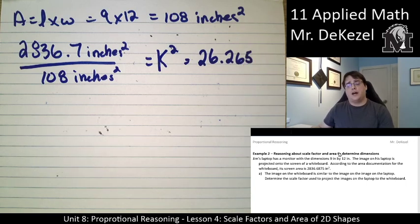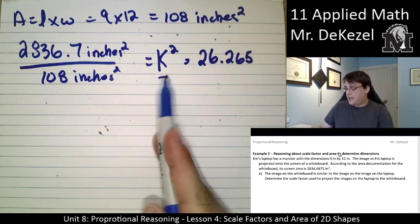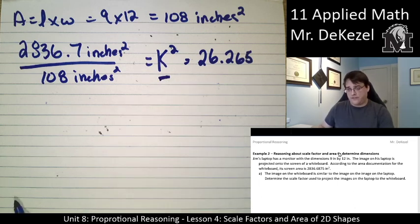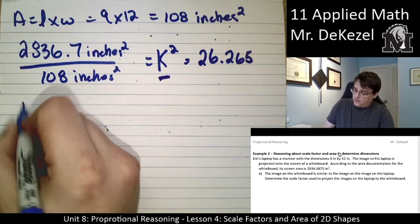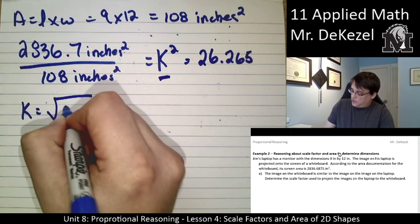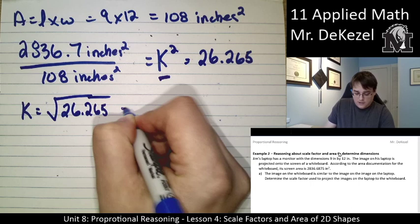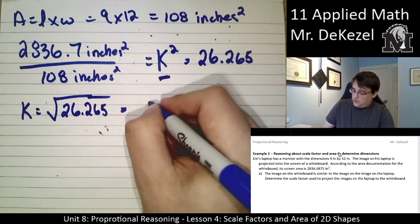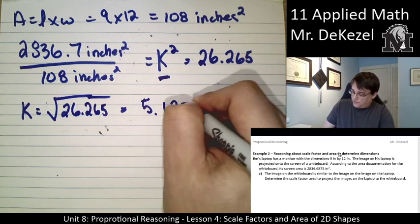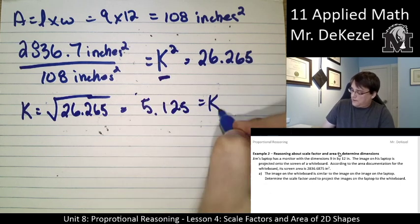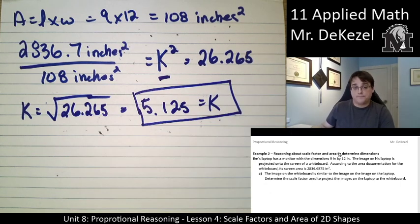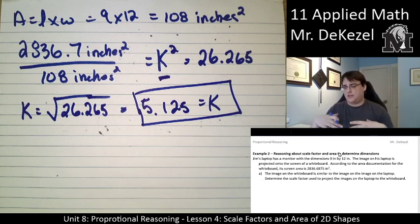So we're almost done. This would be like 2 and a half out of 3 in this problem. But we need to find out what the actual k is, because we're asked for the scale factor that's used to project these images. So we're going to need to square root this number. So k is equal to the root of 26.265, which is equal to 5.125. That equals k. I'm going to put a box around it. So that's our scale factor. That's the factor that is used to project the screen from the computer onto the whiteboard.